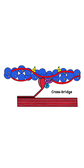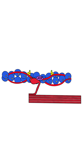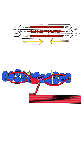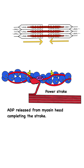Once the crossbridge forms, the inorganic phosphate is released from the myosin and the myosin head pivots, pulling the thin filament towards the M line. This is the power stroke. ADP is then released from the myosin head, completing the stroke.